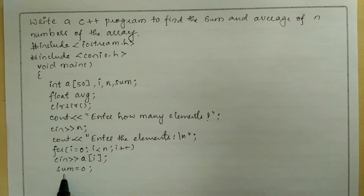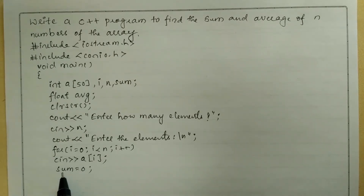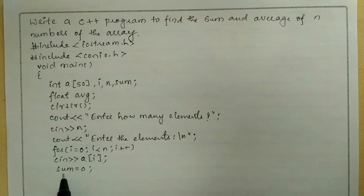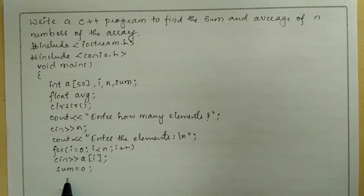Now I am going to initialize sum equal to 0 in order to reset the value of this variable. If I do not write sum equal to 0 then obviously this variable will be holding some value from the previous program — that value would be called a garbage value — which is not required in this program, so that is the reason we need to reset it to 0.